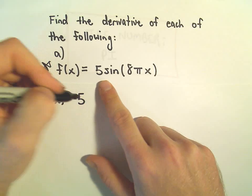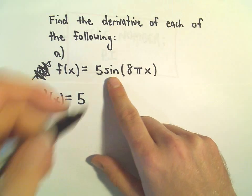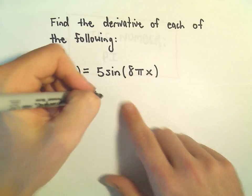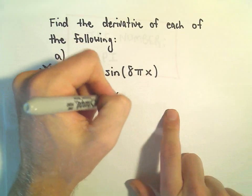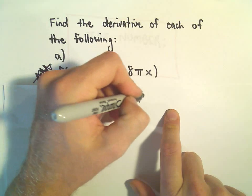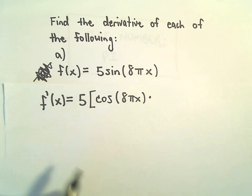Here we'll leave the 5, that just gets carried along. The derivative of sine is going to be cosine. But here we're going to have to use the chain rule. So, we'll leave the inside alone. And then we have to take the derivative of the inside.